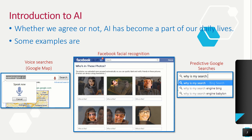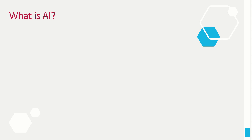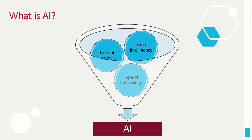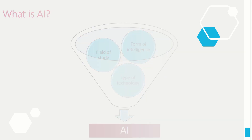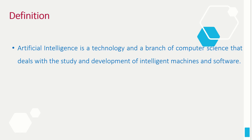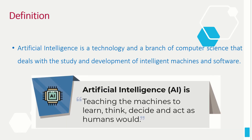So what is AI? Is it a form of intelligence, a field of study, or a type of technology? It is all of these. Artificial intelligence is a technology and a branch of computer science that deals with the study and development of intelligent machines, intelligence, and software.